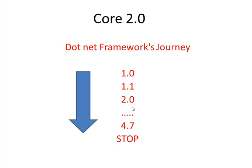After 4.7, a new framework version 5.0 was introduced, but there was a lot of controversy because it was not exactly based upon the 4.x versions — it was completely rewritten. After that controversy, the framework was renamed from .NET Framework 5.0 to .NET Core, and Core 1.0 was launched. So after 4.7, the journey of the .NET framework stopped.